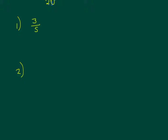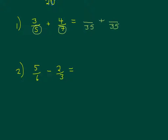I'm going to give you a couple to try — one adding and one subtracting. The first one is 3 fifths plus 4 over 7, and number 2 is 5 over 6 minus 2 thirds. Why don't you give those a go — you can pause the video now. For the first one we need a common denominator between the 5 and the 7. I hope you picked 35 — that's the lowest common multiple. If you picked 70 that would be okay, you just need to simplify at the end. I'm going to pick 35.